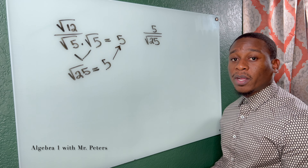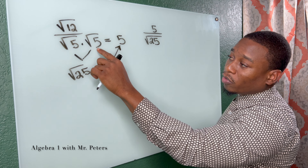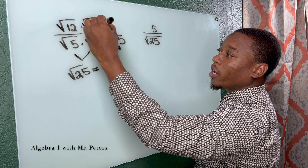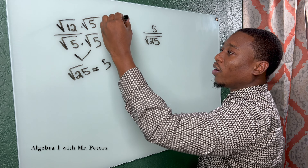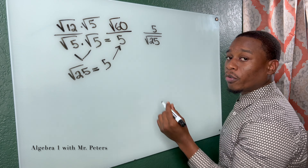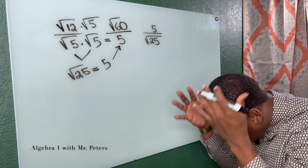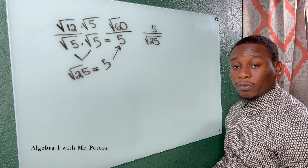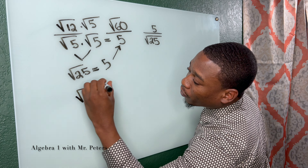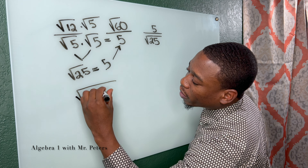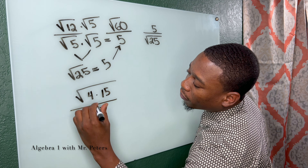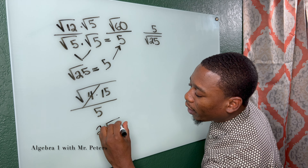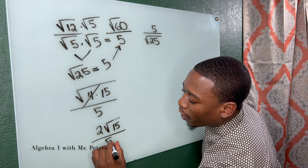Now, when we rationalize the denominator, when I do this step of multiplying by itself in the denominator, I've got to do the same thing in the numerator. So after I do this, I'm going to get radical 60 over 5. But the most important thing you guys have to understand is that this answer is not simplified — you always have to simplify radicals. So I can break this down as the square root of 4 times 15, all over 5. Once we simplify, that perfect square comes out and we're left with 2 radical 15 over 5. And that is it.